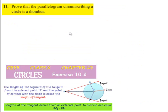Moving on to the 11th question: prove that a parallelogram circumscribing a circle is a rhombus. Moving on to solution.